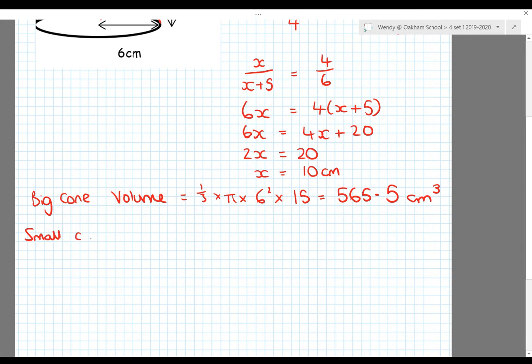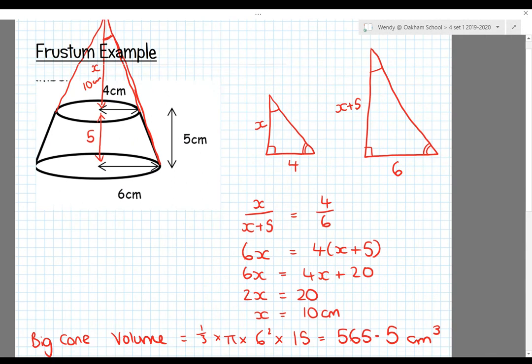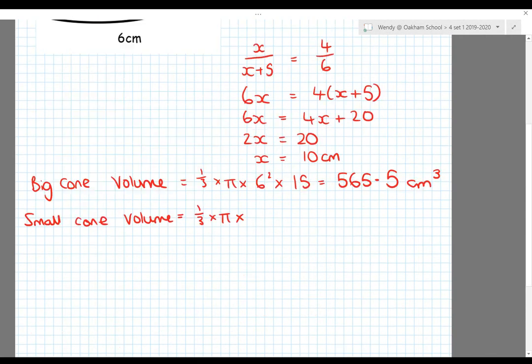For the small cone volume: one-third times pi times 4 squared (the radius of the small cone) times 10 (the height). That gives 167.6 centimeters cubed.